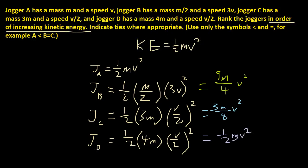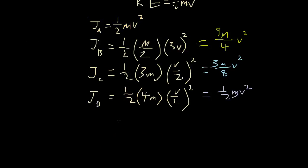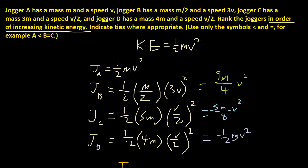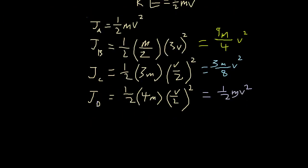So I guess jogger D and jogger A has the same thing. So let's write this down. So if we write this down, we have jogger D in the order of increasing kinetic energy. These both have half times mass times v, which is the kinetic energy. But this one has smaller than mass. So it's jogger C.